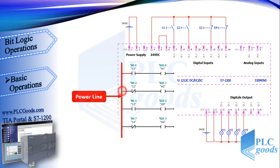Now see the second line. The virtual power can easily reach this normally closed contact with I0.2 address. As you see, the 24V DC cannot reach this PLC input until the S2 push button is pressed, so the normally closed contact remains closed and virtual power can reach the output, which turns the second output on. If the S2 push button is pressed, the second output will be off.